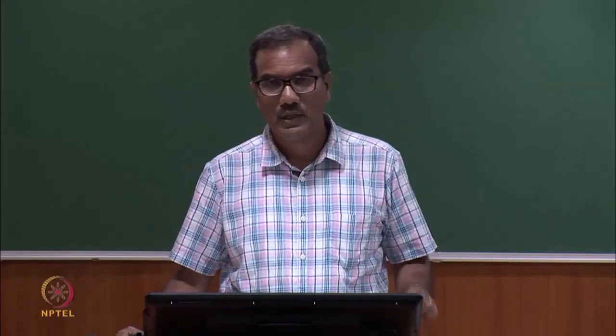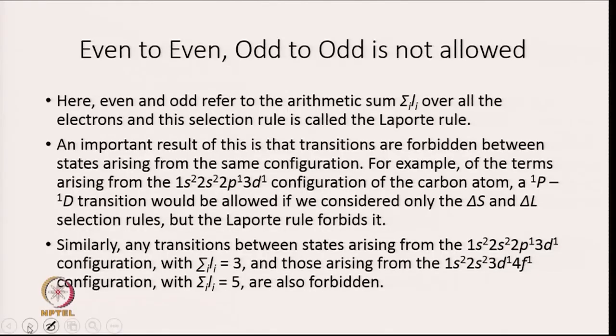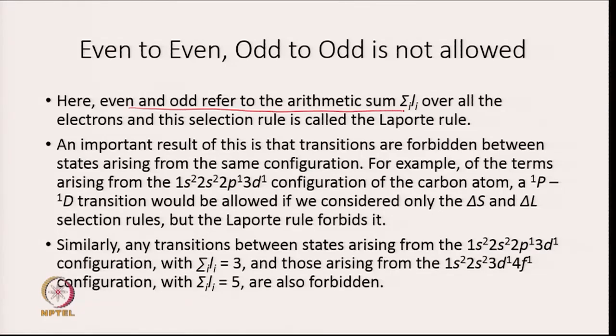One very important piece of information about the selection rule for multi-electron atoms is that even-to-even and odd-to-odd transitions are not allowed. Even-to-odd or odd-to-even transitions are allowed. Even and odd refer to the arithmetic sum Σᵢlᵢ over all electrons. This selection rule is called the Laporte rule. We need to calculate Σlᵢ: if it is odd, the system is odd; if it is even, the system is even.